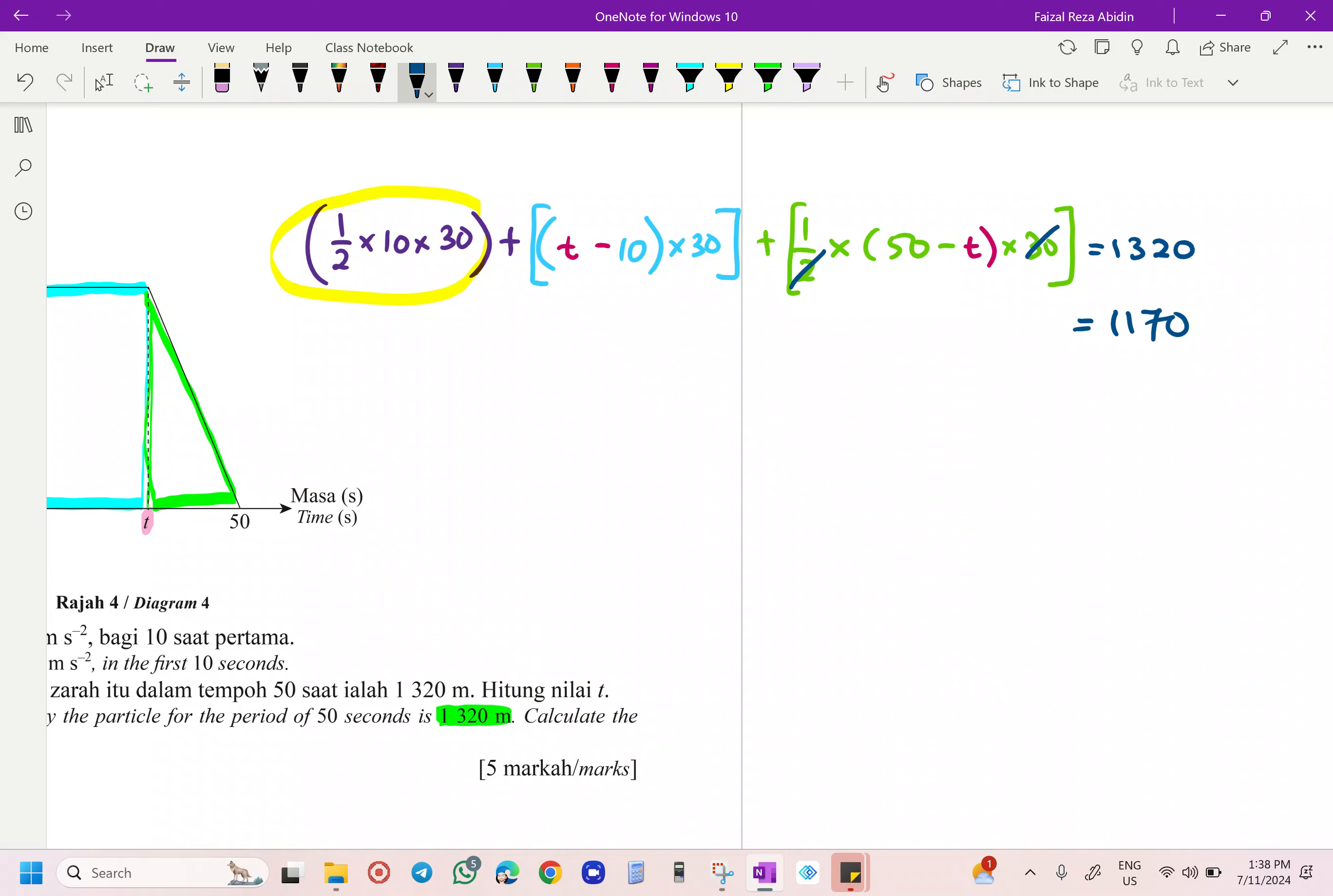1 with 15, and then what happened over here, I am going to expand. We are going to expand. Okay, first one here, 30T minus 300, isn't it? 30 times 10, 300. Then we got our 15 times 50. Berapa? 15 times 50, 750, minus 15 times T, 15T.